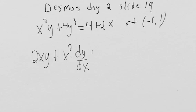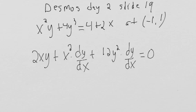Again, a variable we're not sure what it is. Plus the derivative of 4y³ is 12y² times, again, chain rule, derivative of y with respect to x. And that's equal to the derivative of 4 is 0, plus the derivative of 2x is 2.